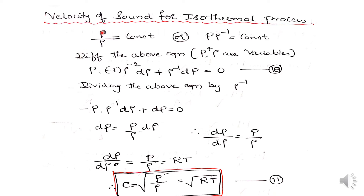For the isothermal process, pressure divided by density equals constant, or equivalently PV = constant where V is specific volume. Since specific volume is the reciprocal of density, we write P·ρ⁻¹ = constant. Differentiating — where both P and ρ are variables — gives P·(−1)·ρ⁻²·dρ + ρ⁻¹·dP = 0 (Equation 10).